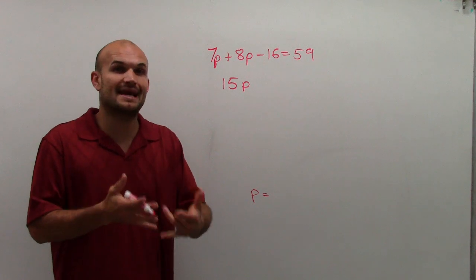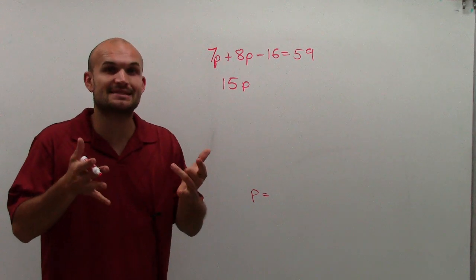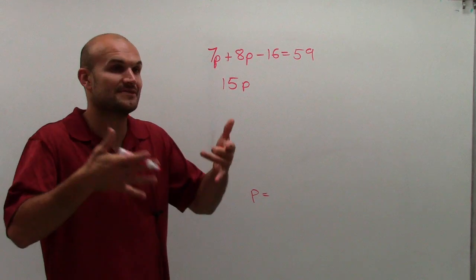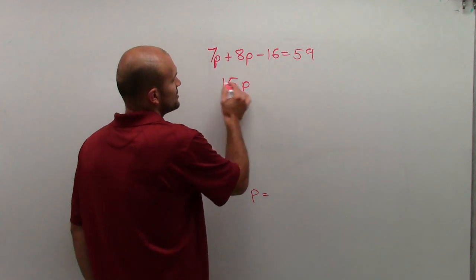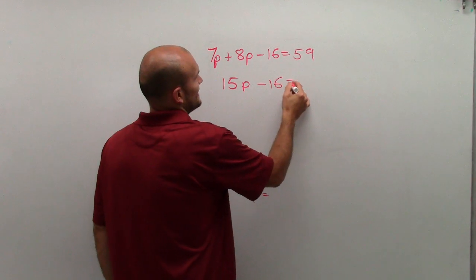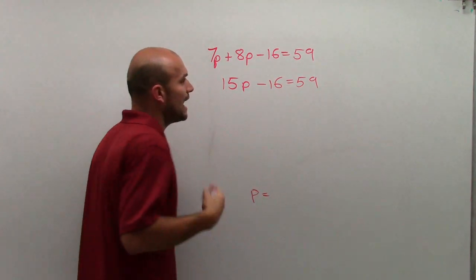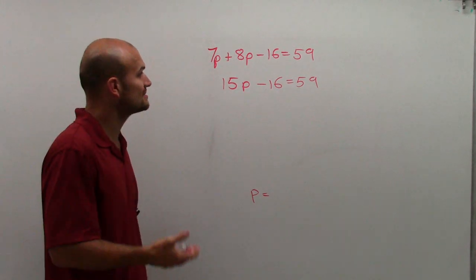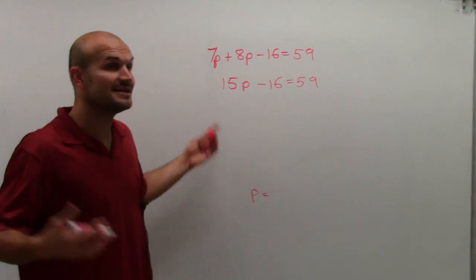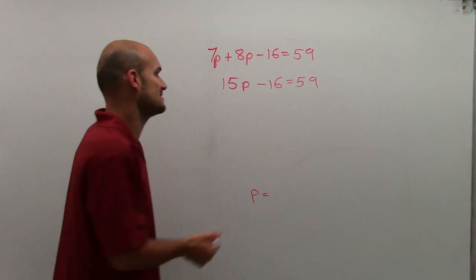7 times p plus 8 times p really means 15 times p. So 15p minus 16 equals 59. Now by combining these two terms, we have a two-step equation, which hopefully you remember how to work on.